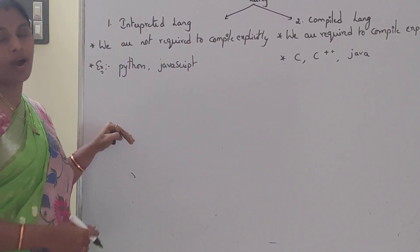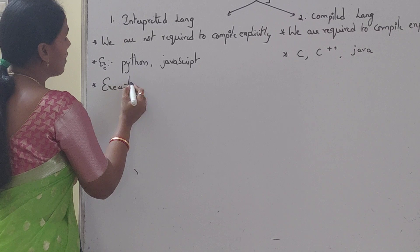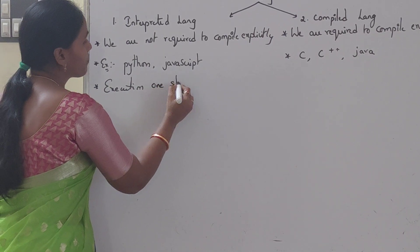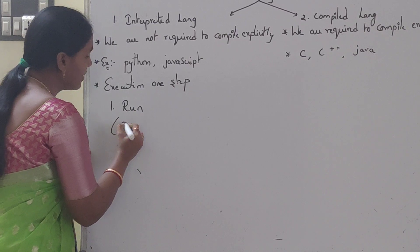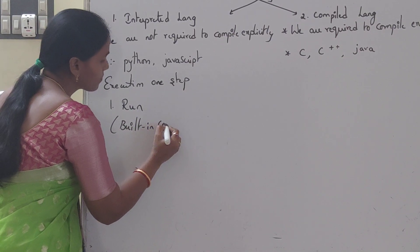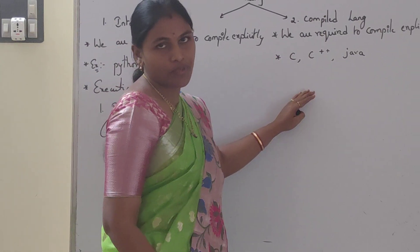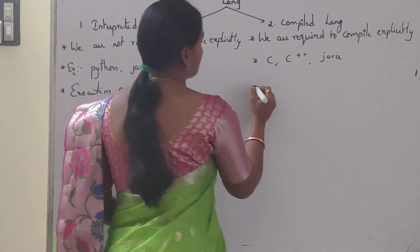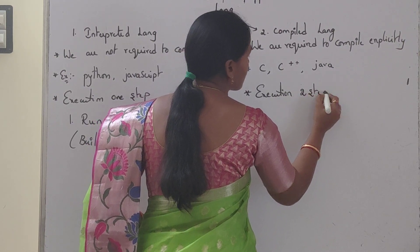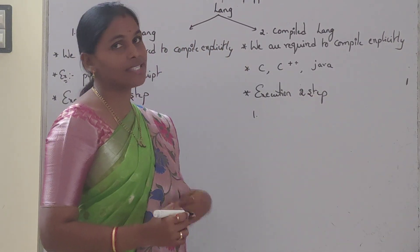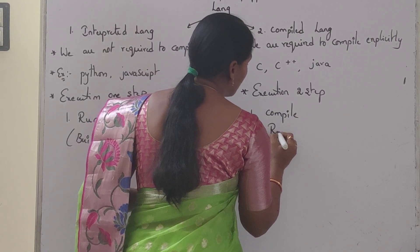For interpreted languages, execution happens in one step — that one step is run — meaning it has built-in compilation. For compiled languages, execution happens in two steps: first one is compile, and second one is run.